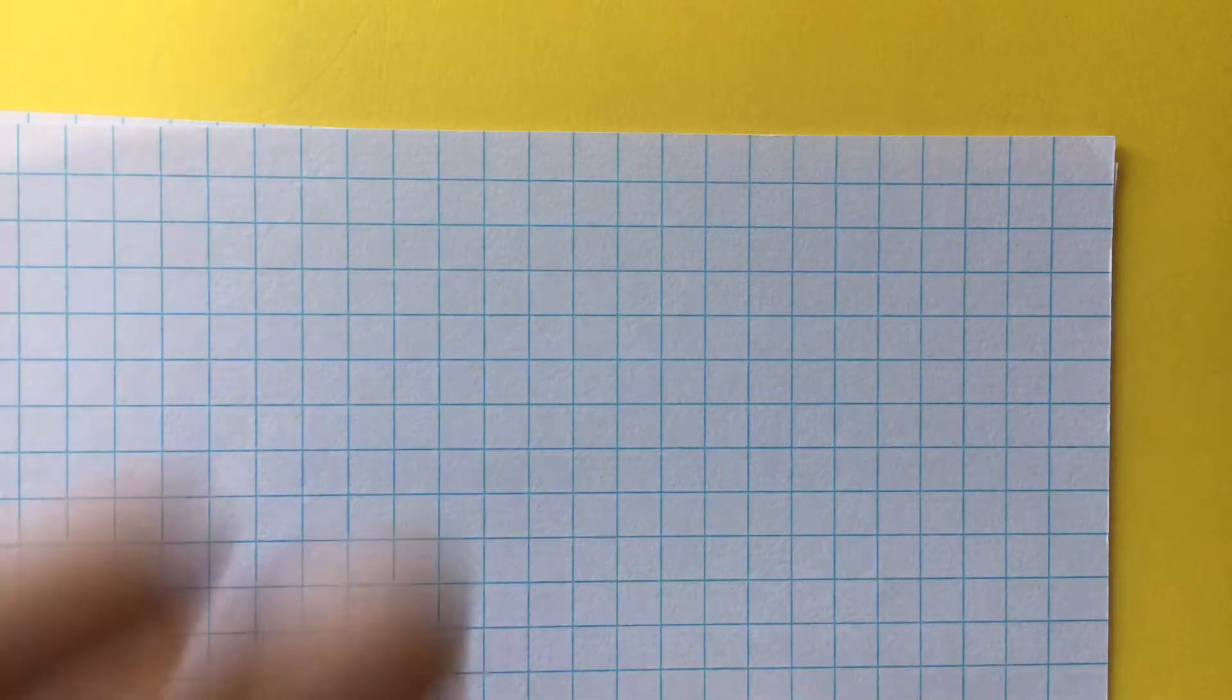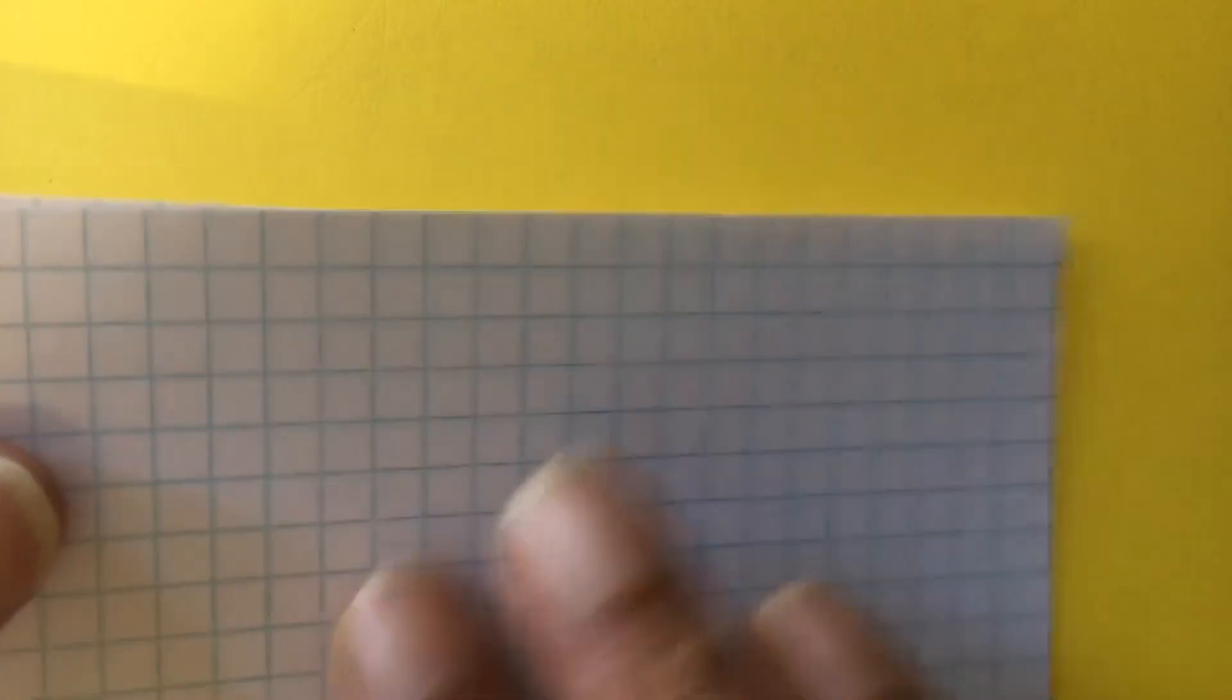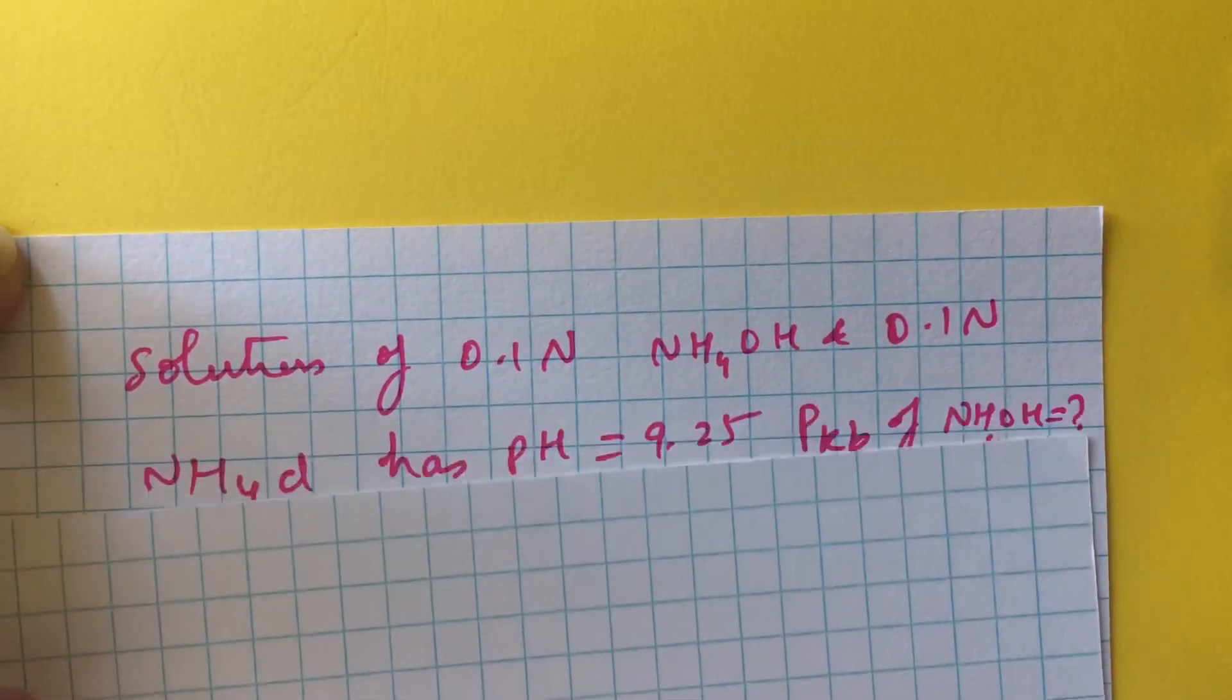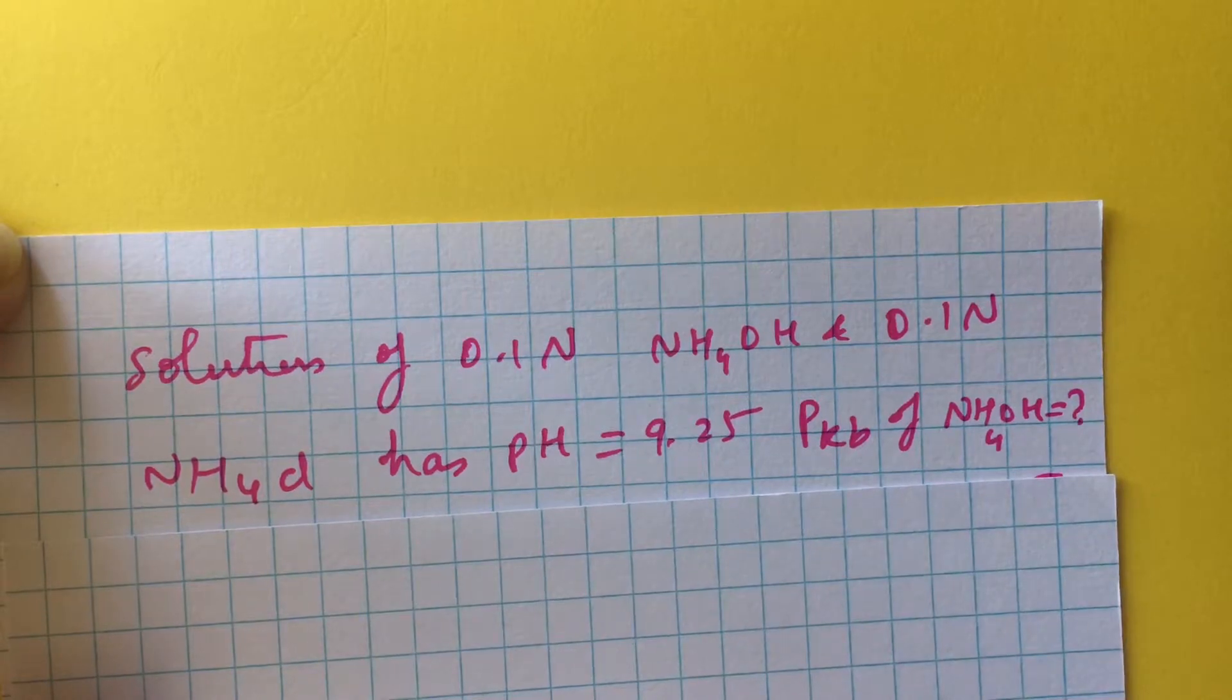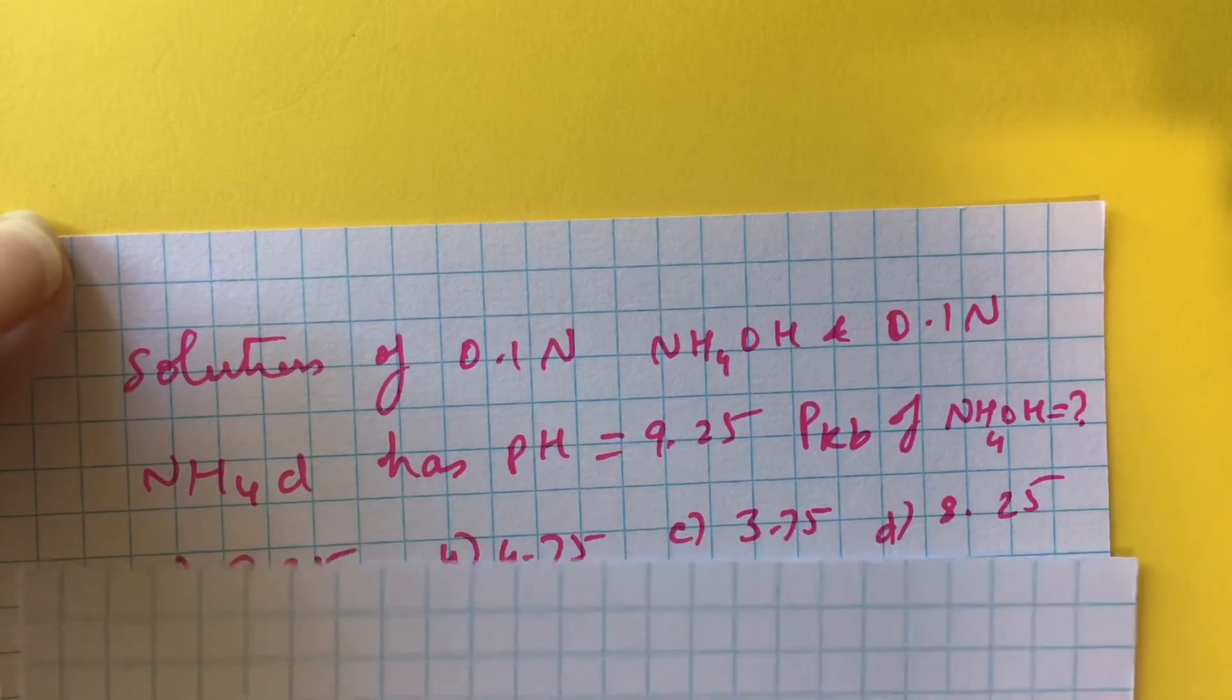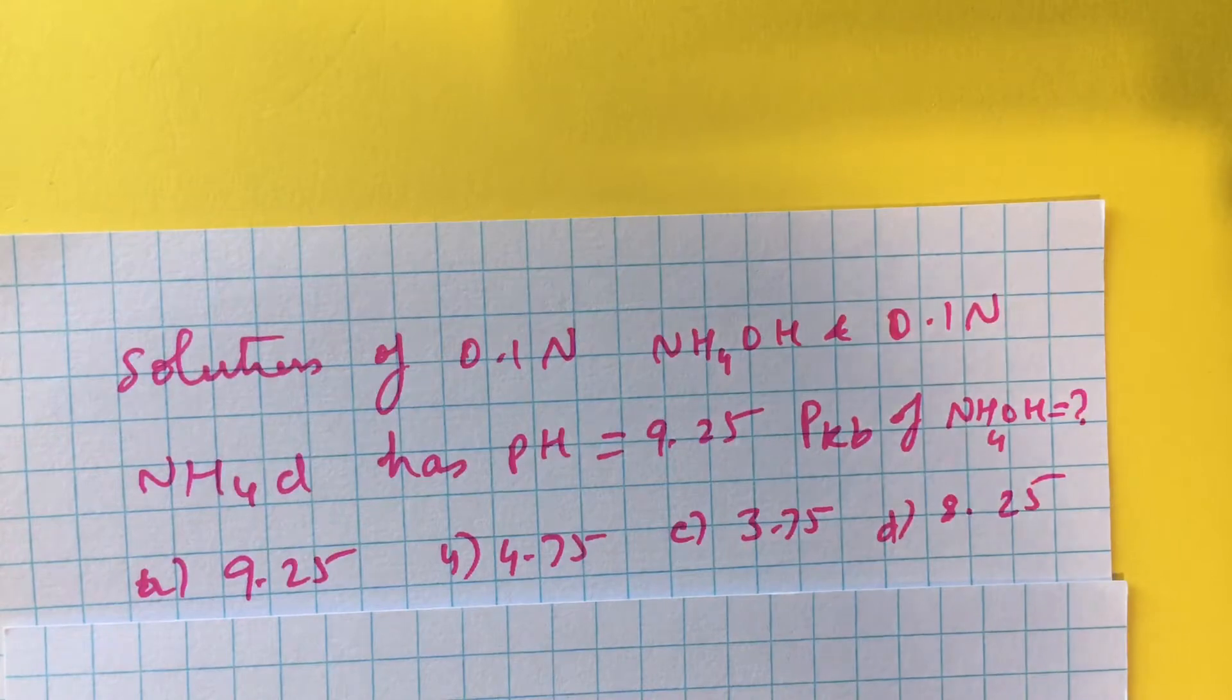Let us see a problem now. Look at this problem. A solution of 0.1 normal ammonium hydroxide, a weak base, and 0.1 normal ammonium chloride has a pH of 9.25. pKb of ammonium hydroxide is how much? Now this problem is given four options of course.